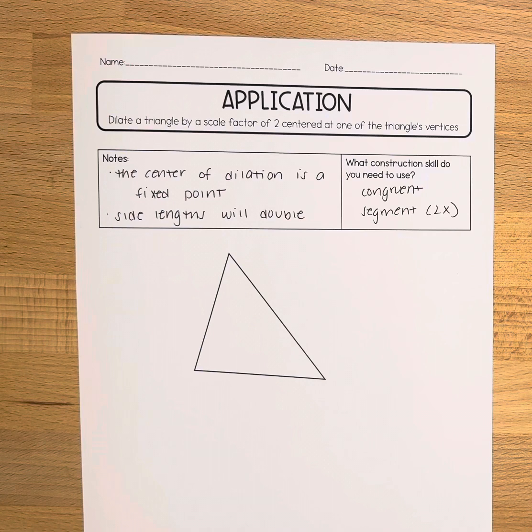In this video we're going to dilate a triangle by a scale factor of 2 centered at one of the triangle's vertices. To start off, let's take note that the center of dilation is a fixed point, that means it does not move after a dilation.